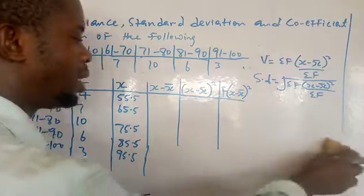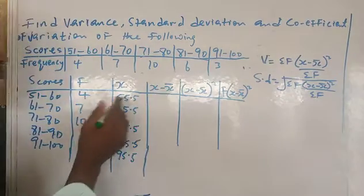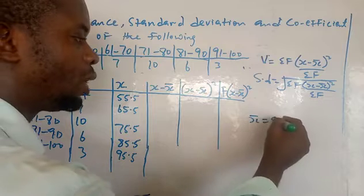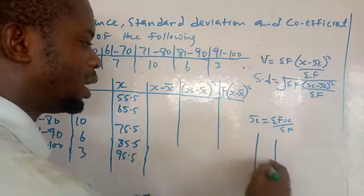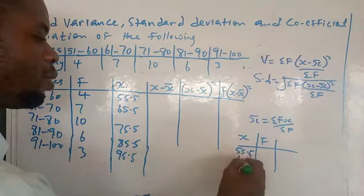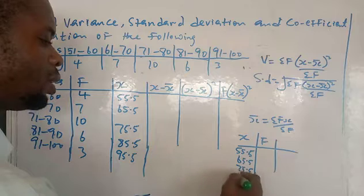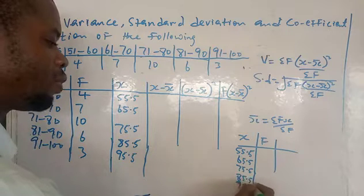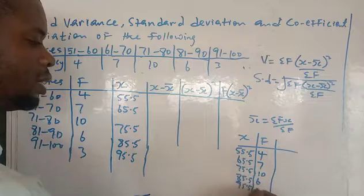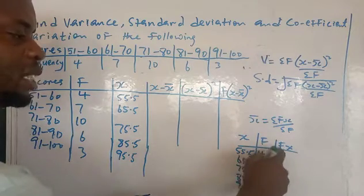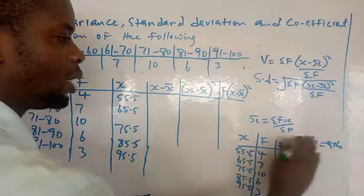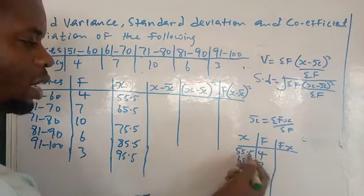Now we need x minus mean, so we need to find the mean first. For grouped data, the arithmetic mean is summation of fx over summation of f. Our x values are 55.5, 65.5, 75.5, 85.5, 95.5 and frequencies are 4, 7, 10, 6, 3. We need fx, which means f times x — so for example, 4 times 55.5.